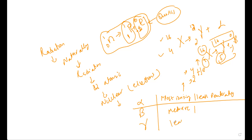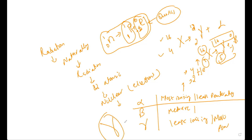Gamma radiation is the least ionizing and most penetrating of the three. Because gamma rays don't have any charge, they can penetrate much further than alpha or beta particles.